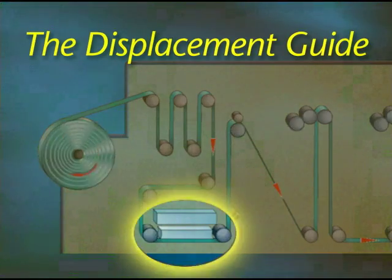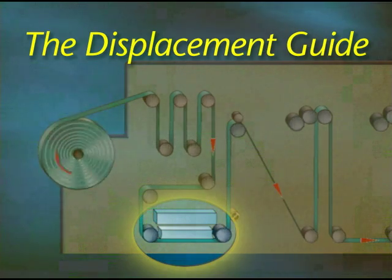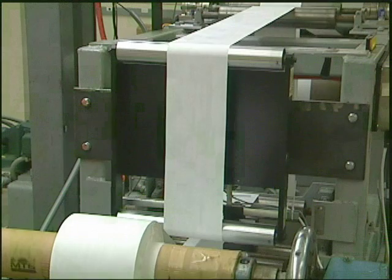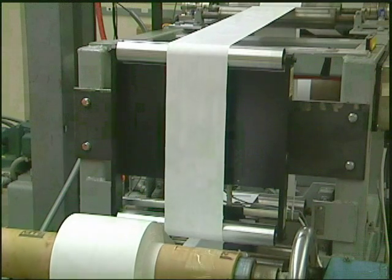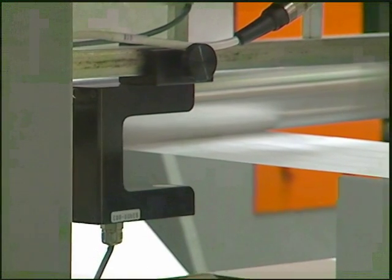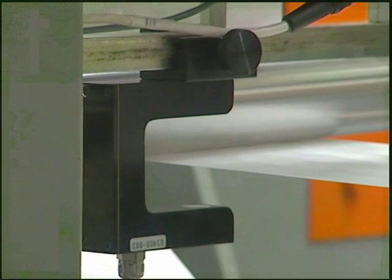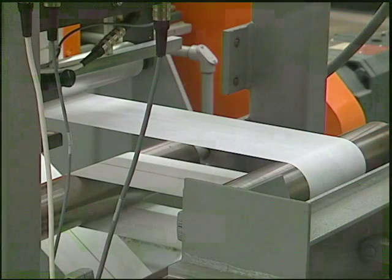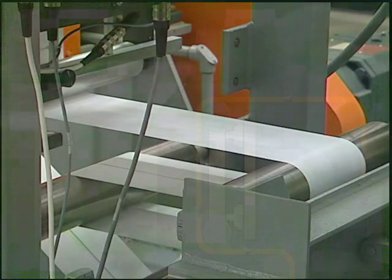The displacement guide. This two-roller or single-roller guide is used in situations where span length is relatively short. In order for the guide to work properly, there must be a fixed roller before the guide and one after the guide. The sensor is placed in the web span between the last shifting roller and the first non-shifting roller after the guide, and in the first one-third of the span.